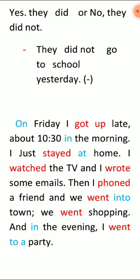I watched TV. I watched. And I wrote - الفعل الحاضر write يصير wrote. Some emails. Then I found - found. And we went - بدلاً ما أقول في الحاضر go، استخدمت went. We went shopping - في الحاضر I go shopping، هنا قلت I went shopping. In the evening - in. I went to a party. I went في الماضي بدلاً ما أقول go. To a party - to هو البريبوزيشن المناسب.